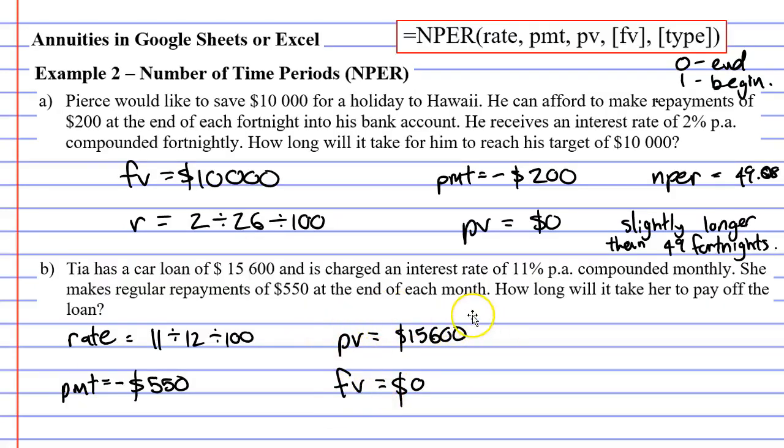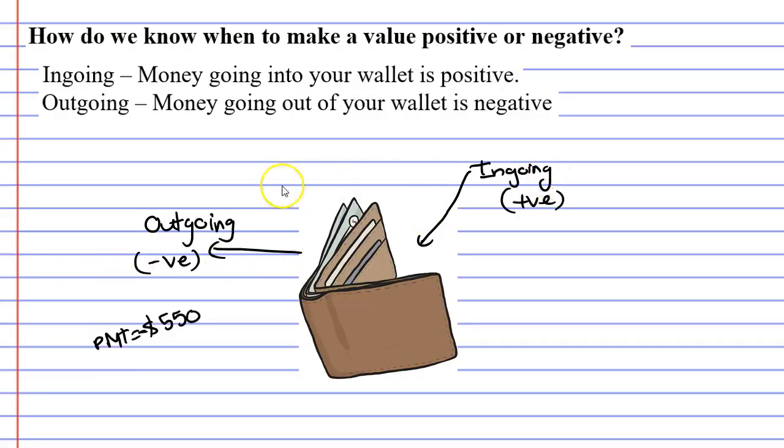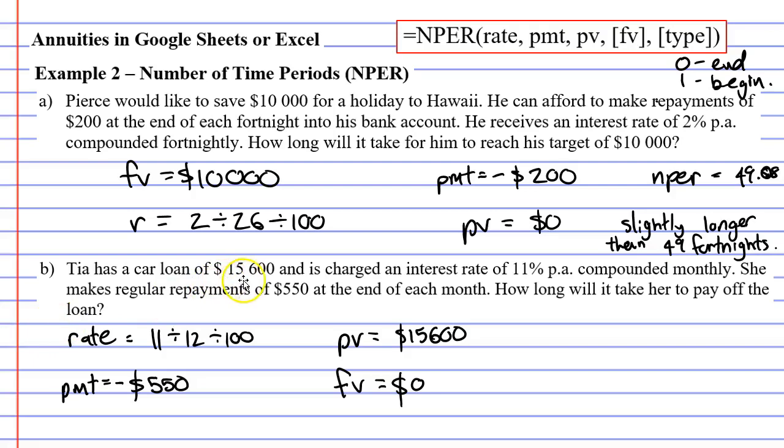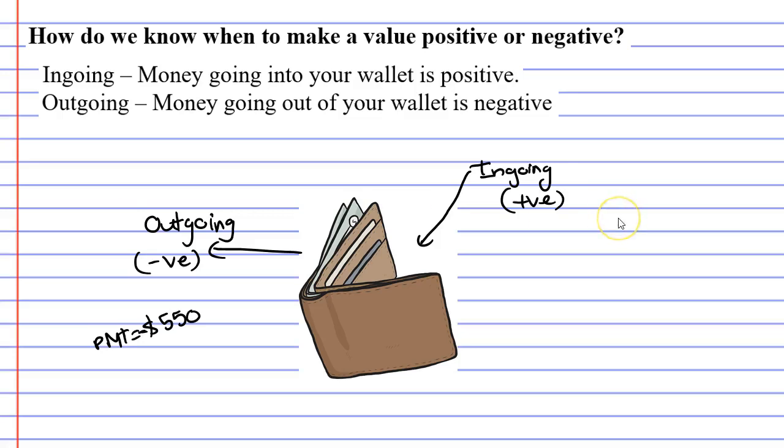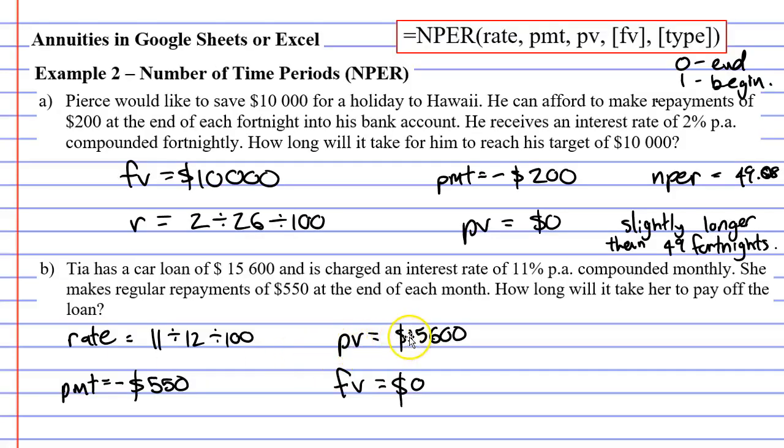What about our present value? A lot of people think it's a loan, so surely this amount is negative because loans are negative. But we've got to think about ingoings and outgoings. If you have a loan, meaning you've borrowed $15,600, where does that money go? It's actually an ingoing because technically that money has gone into your wallet. It's come from the bank and been given to you. So we're going to leave the present value as positive and our repayment as negative.